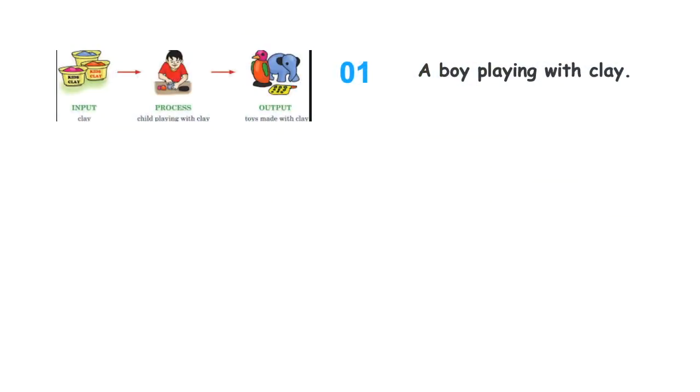In the first example, we see that a boy is playing with clay. The clay here is raw material and it is input. The process is child playing with the clay, and finally the output is toys that are made with clay.